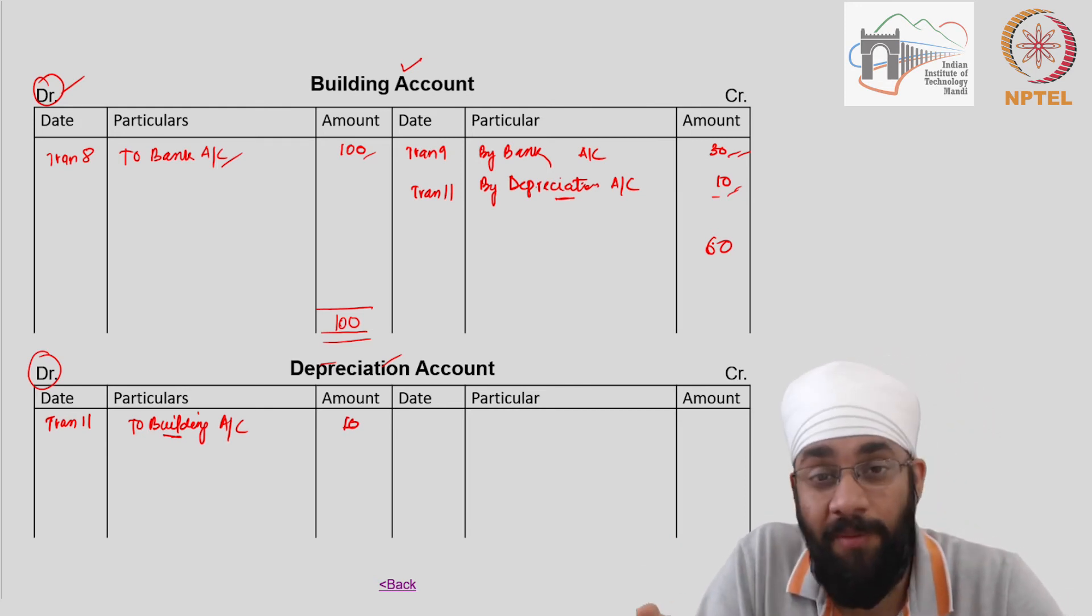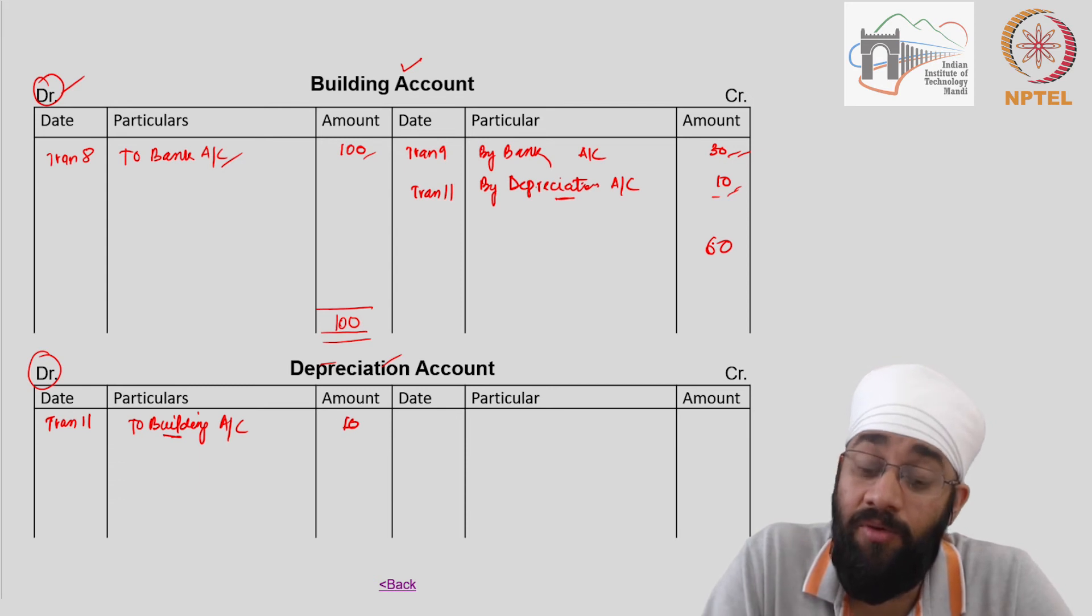Now in a business you would have multiple properties, multiple buildings - you could sell, buy and so on - so everything will be collected at one place.